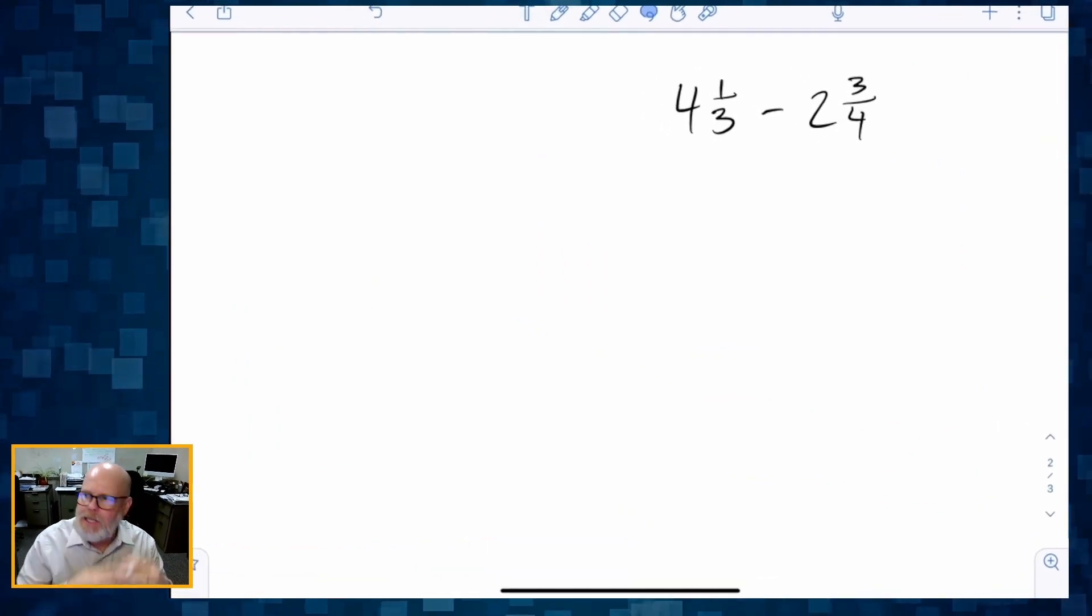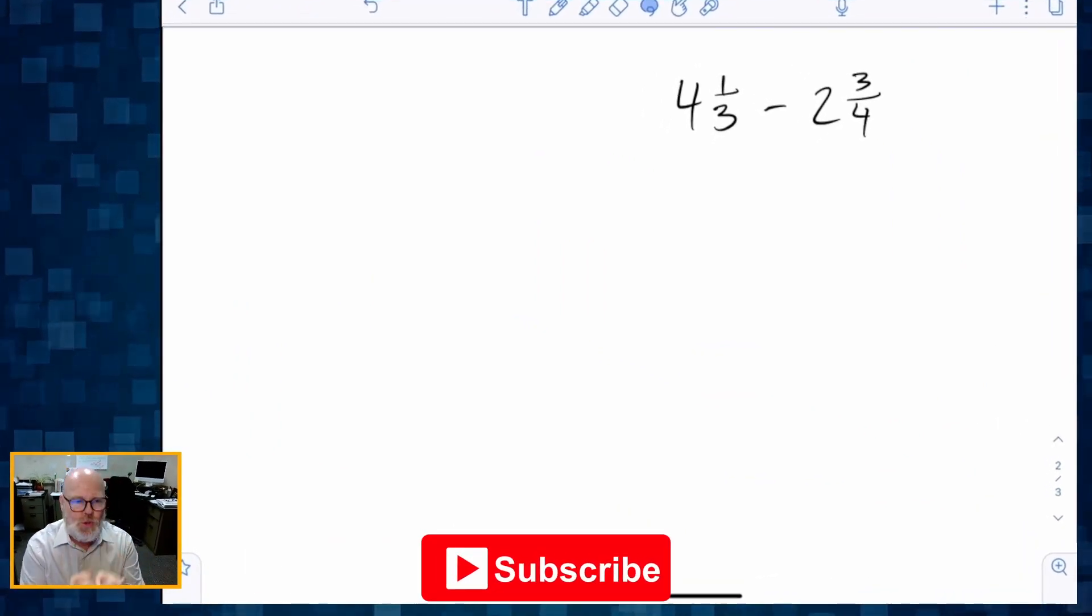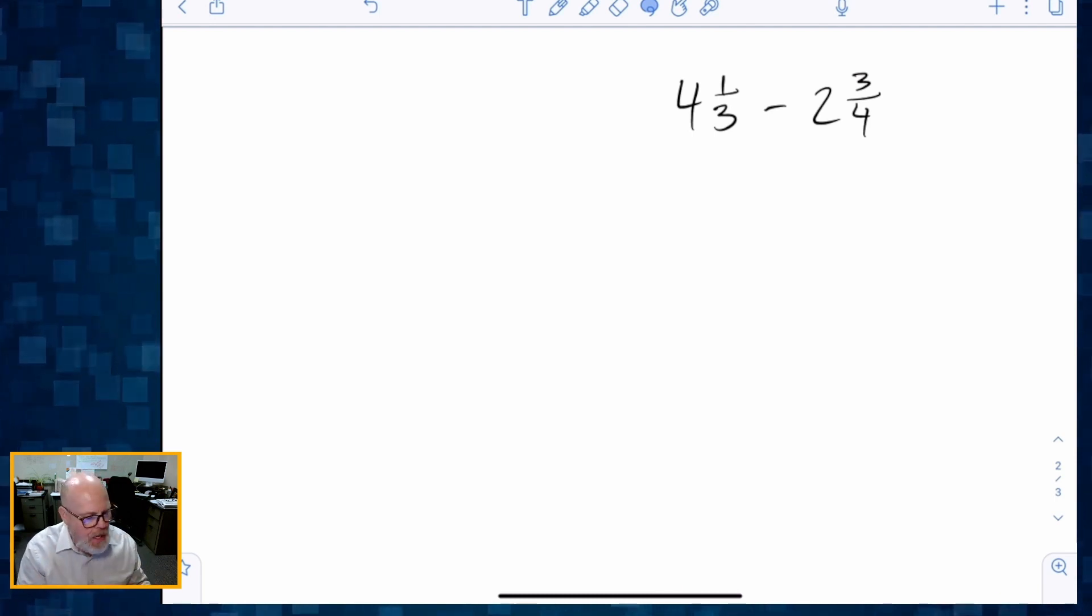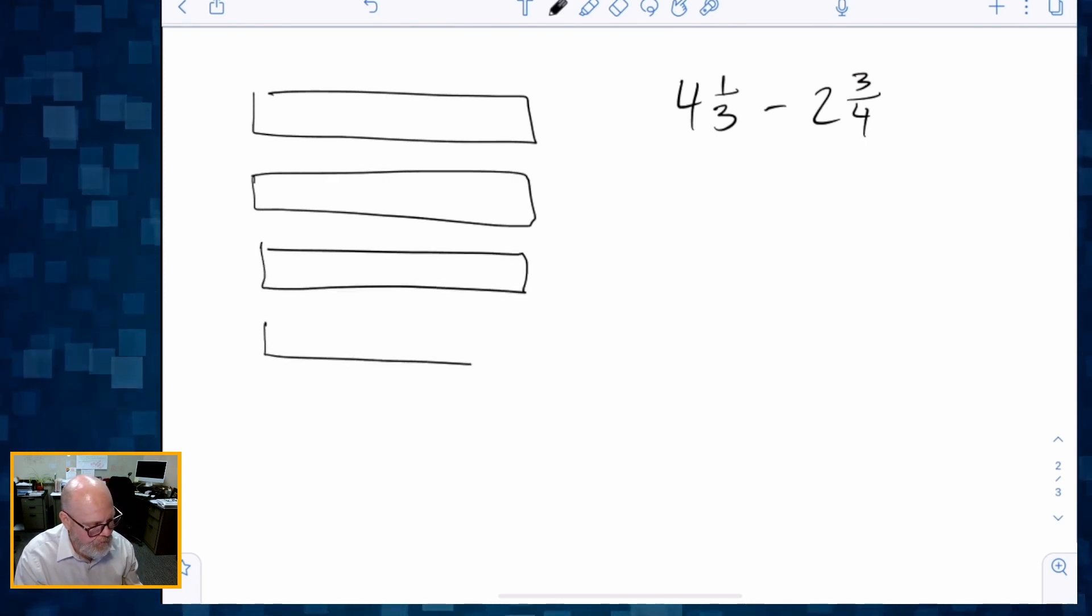And what we're going to do is let's say we're going to start with 4⅓ minus 2¾. All right, so we know all the standard algorithm stuff, but here's what we're going to do. Instead, I'm going to represent 4⅓. So there's one, there's two, there's three, there's four and one third.